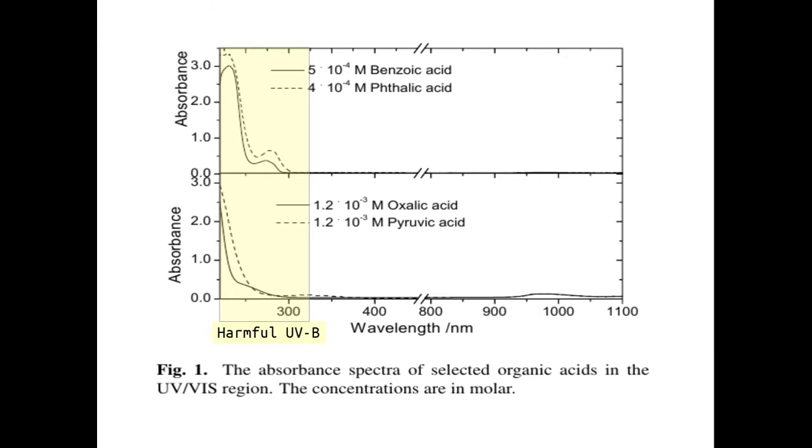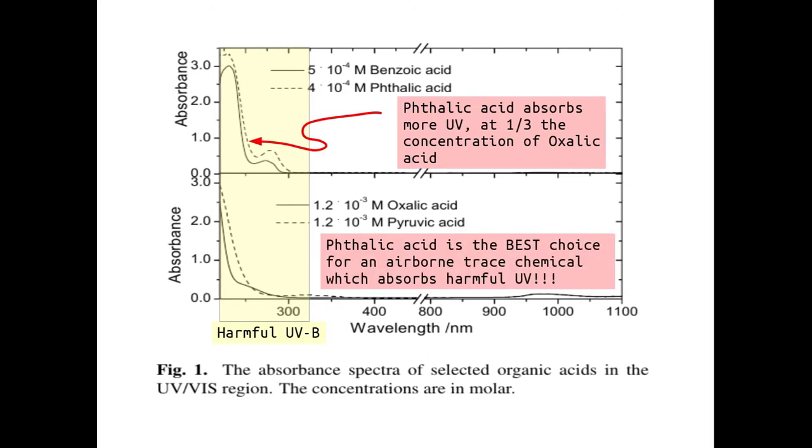Again, here's our harmful ultraviolet B area. Phthalic acid absorbs more ultraviolet at one-third of the concentration of oxalic acid. Phthalic acid is the best choice for an airborne trace chemical which absorbs harmful ultraviolet.